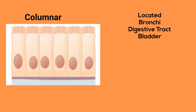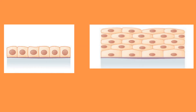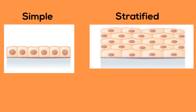You will find columnar tissues in the digestive tract and the trachea. In addition, you will find them classified by arrangement. Simple epithelial are single layers of cells, and stratified epithelial are stacked up on one another.